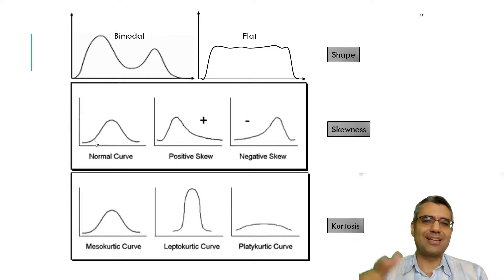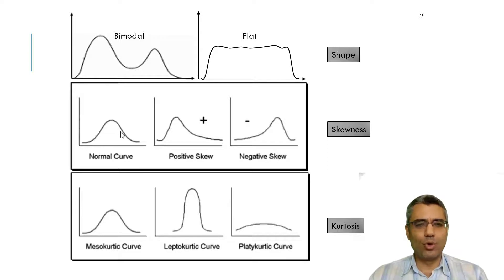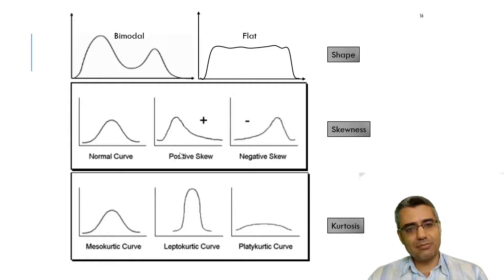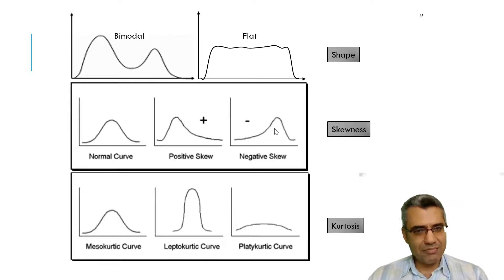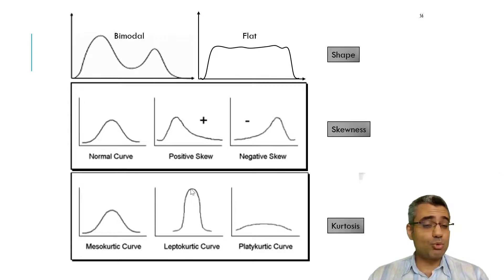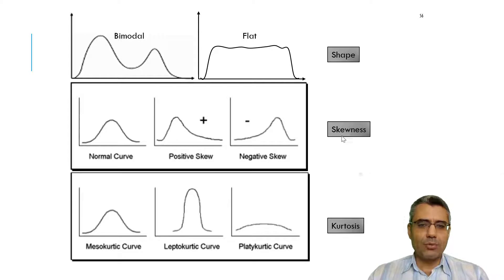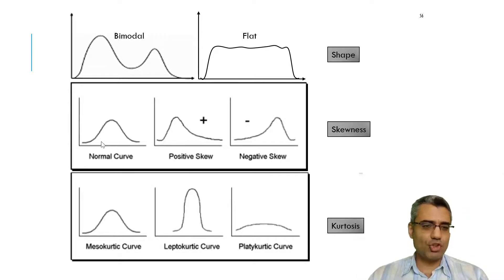The distribution of data in the real world and in nature is usually like a normal curve, and this is the assumption for many statistical tests. But sometimes the data we use is positively skewed or negatively skewed — the tail goes to the right or left — so the shape is a bit different. Sometimes it has two peaks, or it's flat, or the peak is too sharp. When we talk about the tails, that's skewness; when we talk about the peak, that's kurtosis.